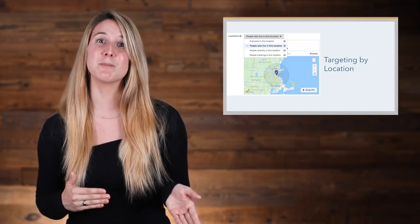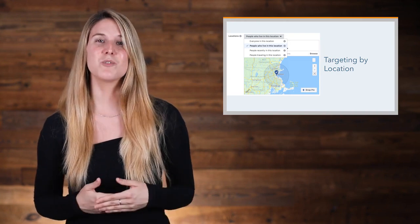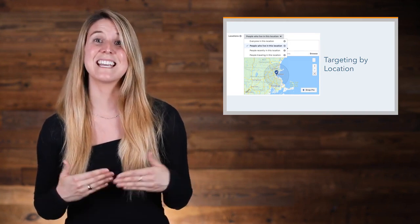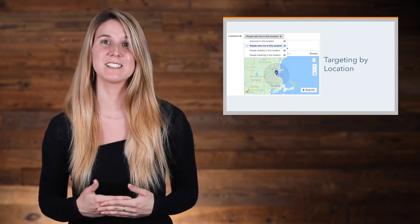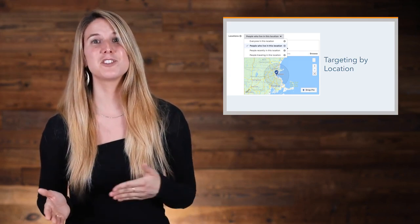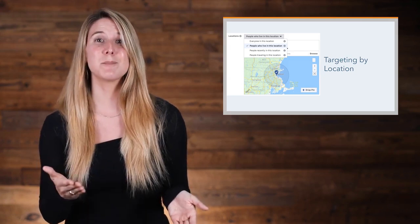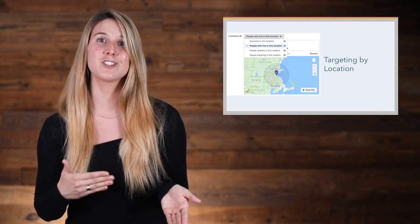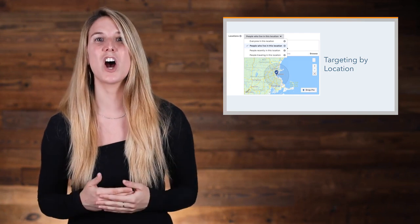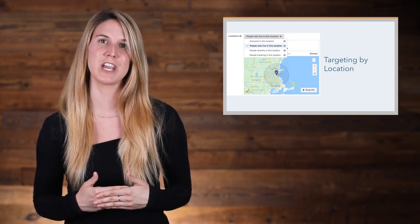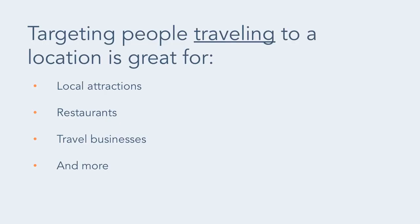Location is not limited to just people who live in that location. You can also target people who are recently in a specific location, tracked by where they use their mobile device. Another option is to target people traveling to a location, which Facebook defines as users who had a certain geographic area as a recent location that's at least 100 miles away from their home location. This is great for businesses like local attractions, restaurants, and travel businesses. Or you can target everyone in a location.